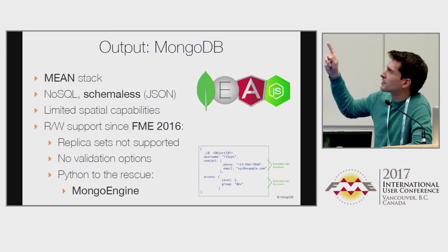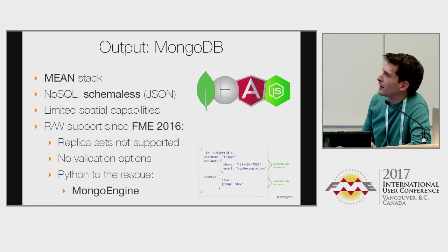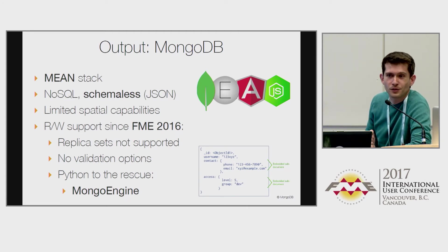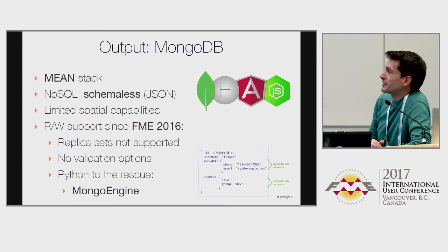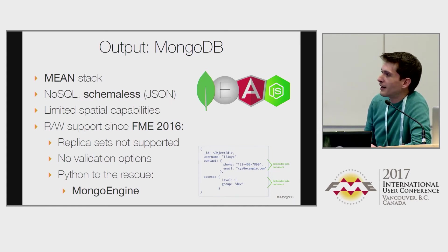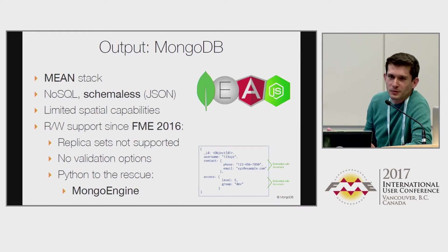We also output to MongoDB, a popular technology used in web applications in the MEAN stack — Mongo, Express, Angular, and Node.js. In 2016, read-write support for MongoDB showed up in FME and we were excited to use it. But it didn't support replica sets, which we definitely needed in production, so we couldn't write to those. There was also no validation — and even though MongoDB is schema-less, you still need some kind of validation to avoid putting junk data in.